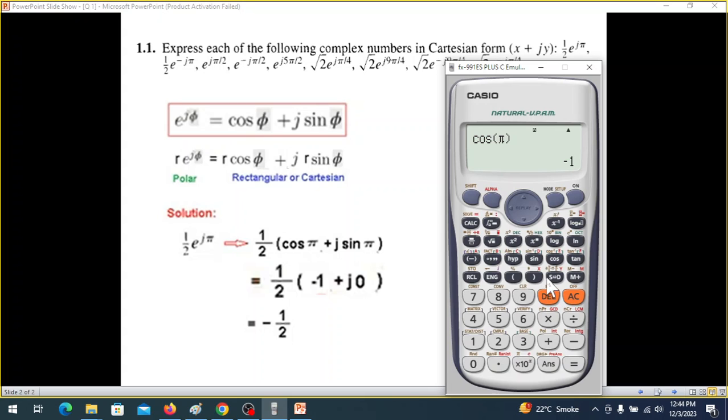Similarly, sin π, sine, shift, π, bracket close, is equal to 0. So that is how you solve. We'll be solving all these questions by putting your calculator in the radiance mode.